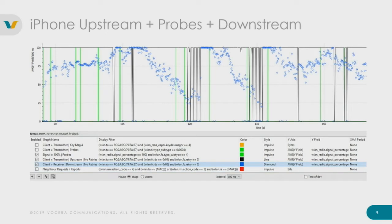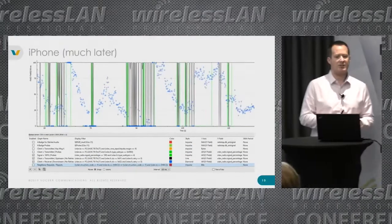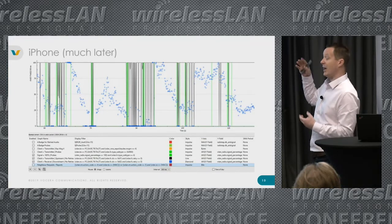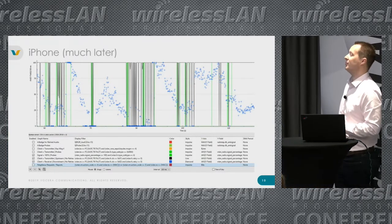We then layer on the downstream traffic — frames the access point is sending to my client — which goes up and down as I roam between APs. At 120 and 135 seconds you can see lots of breaks in transmission; that's without 11k. The iPhone was saying 'I need to roam, I'm going to scan everything.' I could hear these roams in the audio — they weren't horrendous, but they weren't perfect. Even after leaving the iPhone in my pocket for four hours hoping it would learn the channels, the picture wasn't much better.